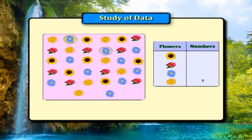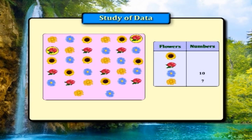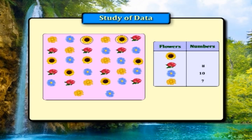Counting the violets: 1, 2, 3, 4, 5, 6, 7, 8, 9, 10 violets. Counting the roses: 1, 2, 3, 4, 5, 6, 7, 8 roses. Counting the sunflowers: 1, 2, 3, 4, 5, 6, 7 sunflowers.